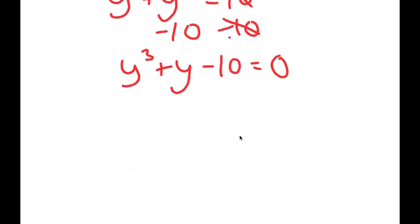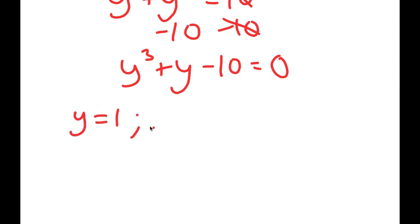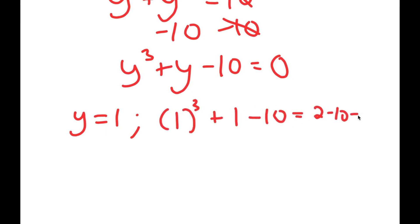To solve this equation, we need to first find one solution and then use that to find the remaining solutions. To find that first solution, we test values by plugging them in and seeing if they work. I'm going to start with y equals 1. If y equals 1, I get 1 to the power of 3 plus 1 minus 10, which is equal to 2 minus 10, which is negative 8 — that's wrong.